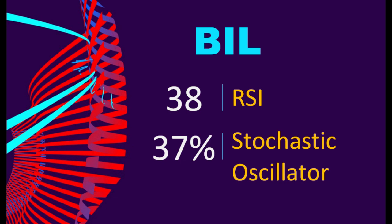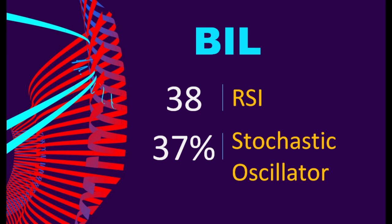The current stochastic oscillator of BIL is 37%. It indicates that the stock is experiencing a strong downtrend and strong selling pressure. In this case, an oversold signal may indicate that a stock is hitting a temporary bottom, but it doesn't necessarily mean that the trend will reverse immediately. Trend Outlook: The probability of BIL share price rising is 86%. Combining multiple technical analysis indicators, BIL has 1 bullish signal and 6 bearish signals.